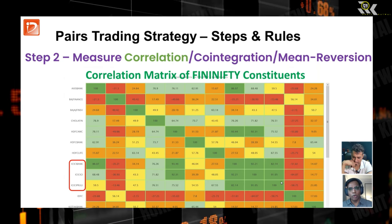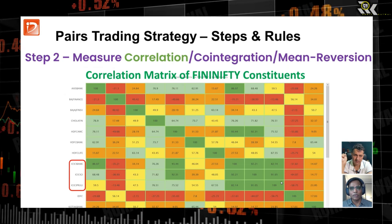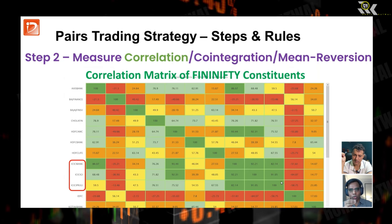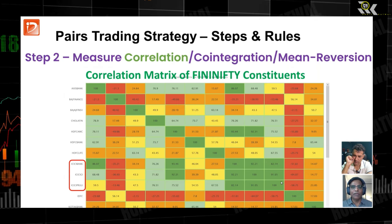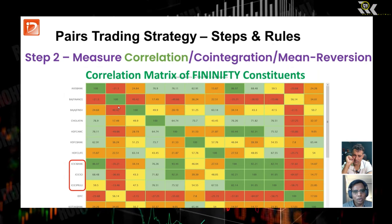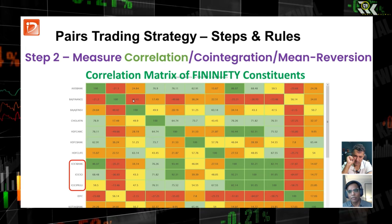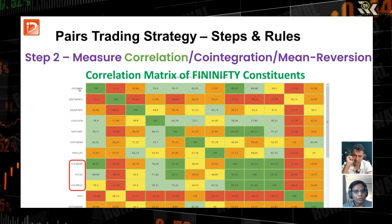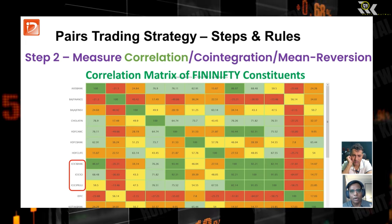This is a correlation matrix, which you can also plot in an Excel sheet using the correlation coefficients of any index or sector constituents. Here I plotted the correlation coefficient between pairs as a matrix — that's why it's called a correlation matrix of the Fin Nifty constituents. Green means highly correlated, red means negatively correlated, and somewhere in between is yellow or orange. A stock plotted against itself will always be 100% correlation — that is our control.